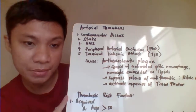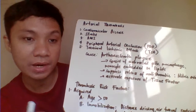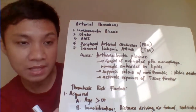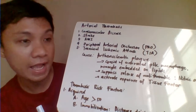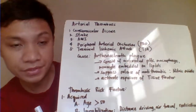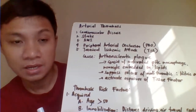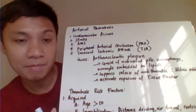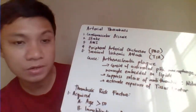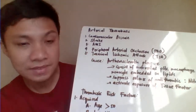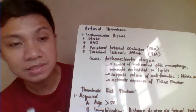Arterial thrombosis is characterized by clot formation within the arteries. Examples include cardiovascular accidents (CVA), acute myocardial infarction (AMI), stroke, peripheral arterial occlusion (PAO), and transient ischemic attack. The most common are PAO and transient ischemic attack, but they are less fatal compared with cardiovascular disease and stroke.